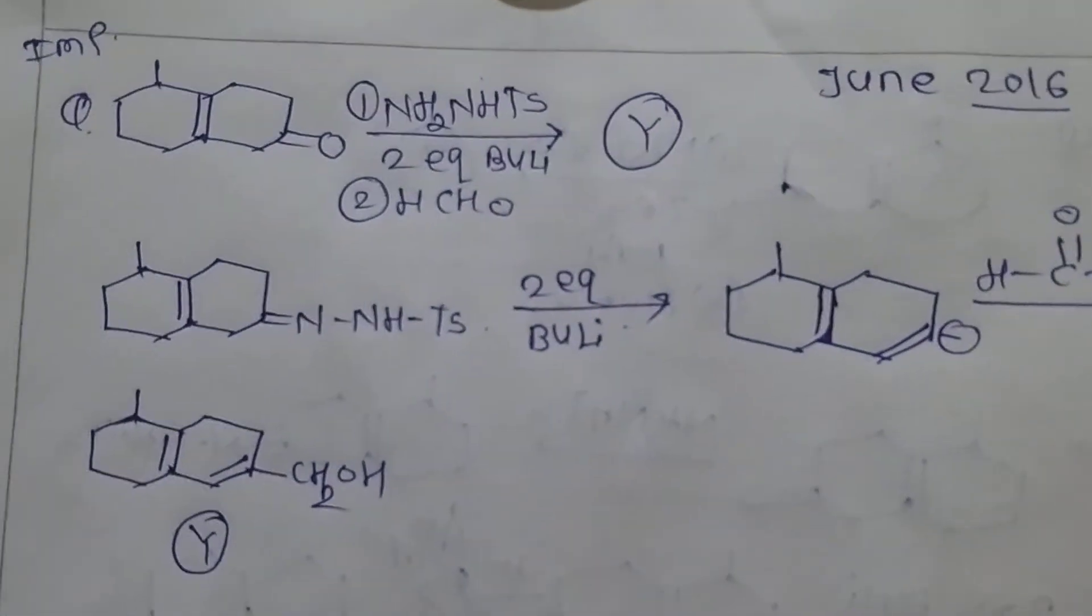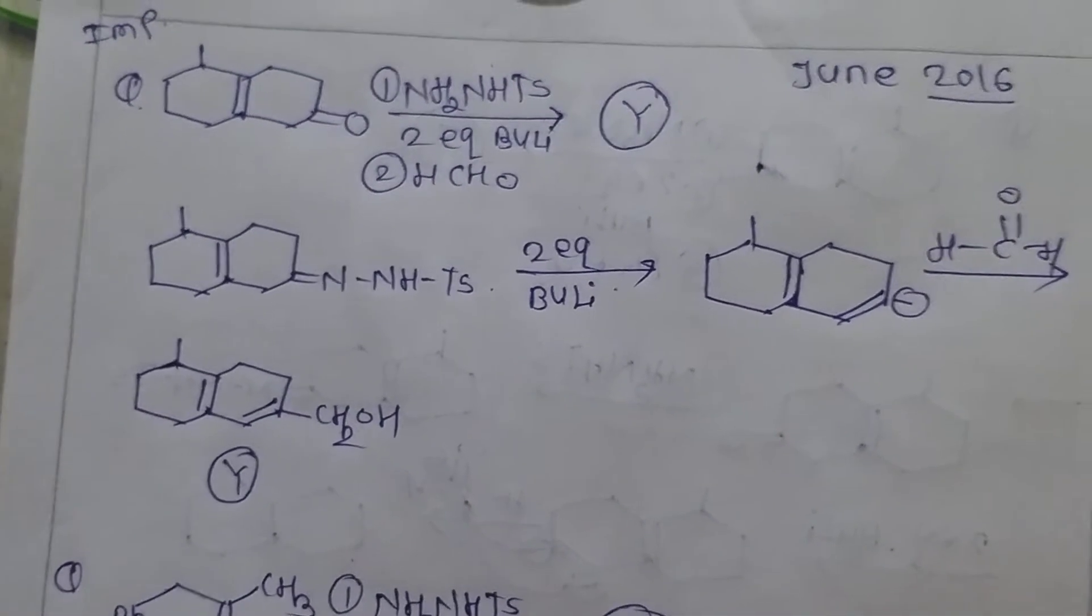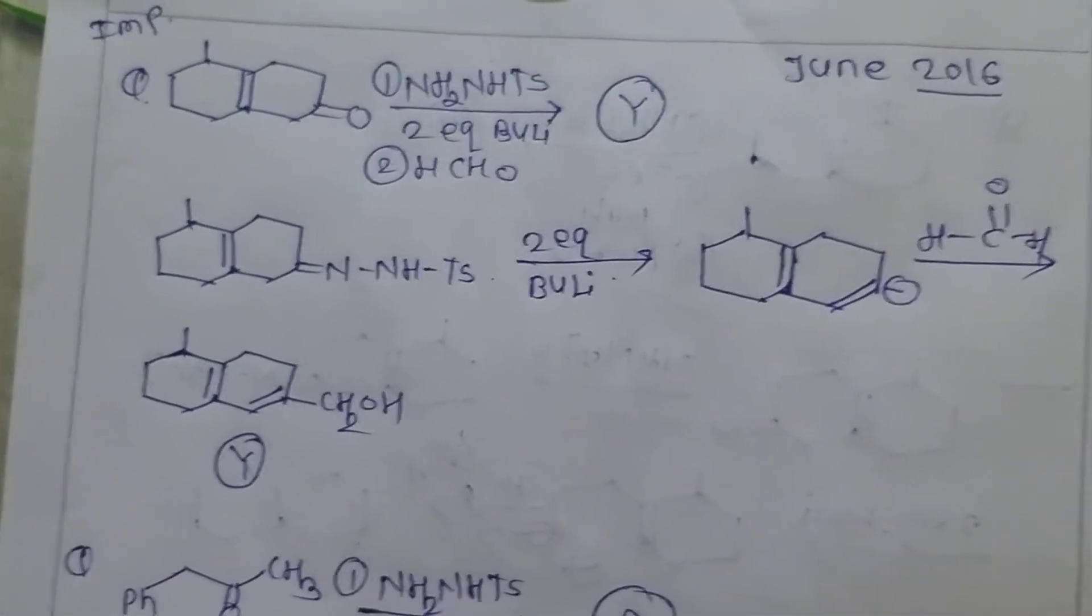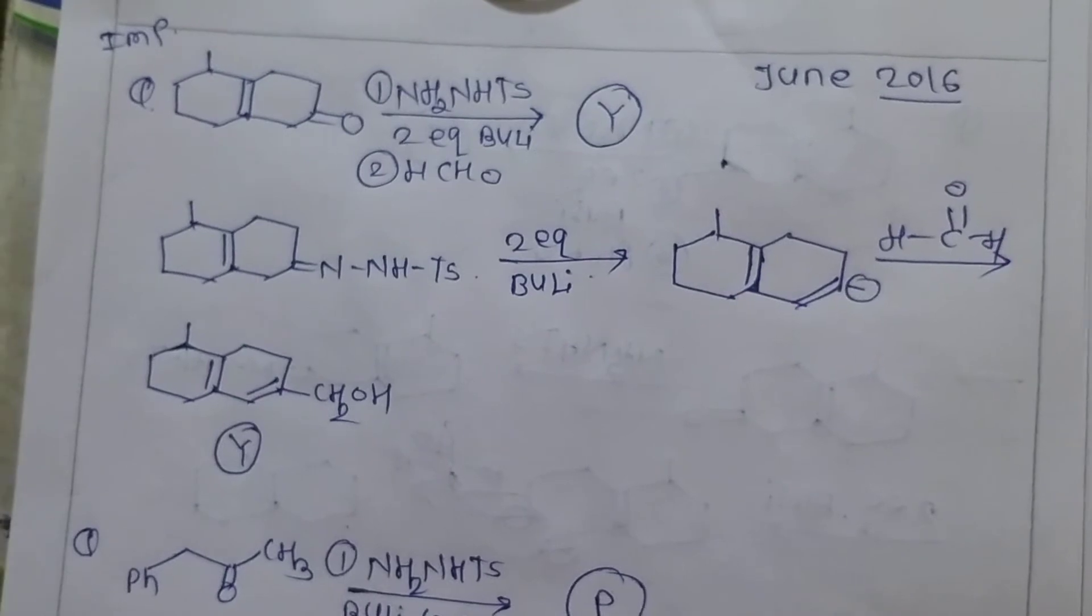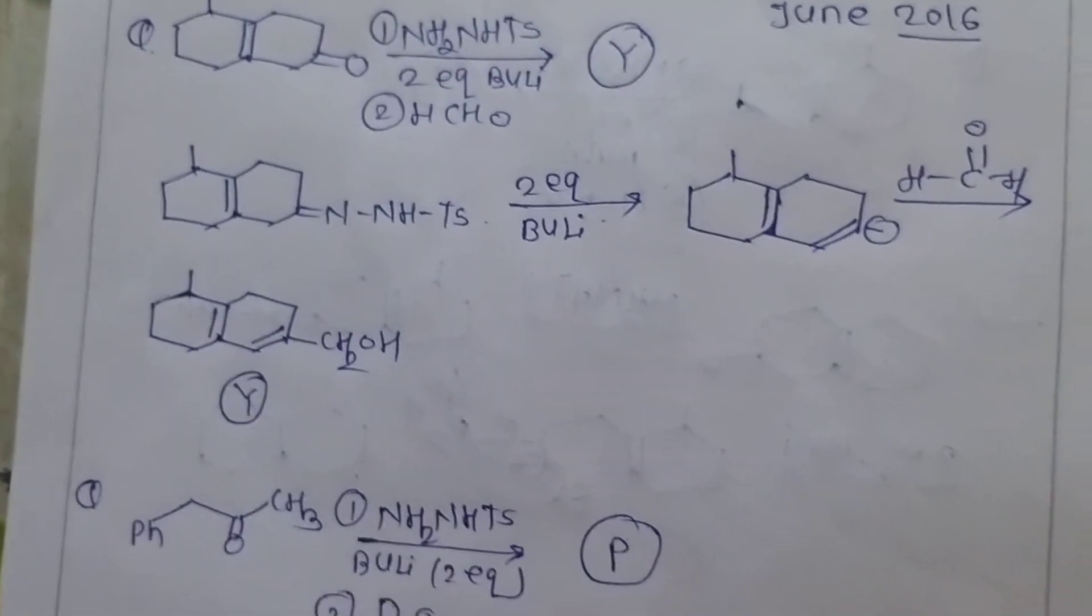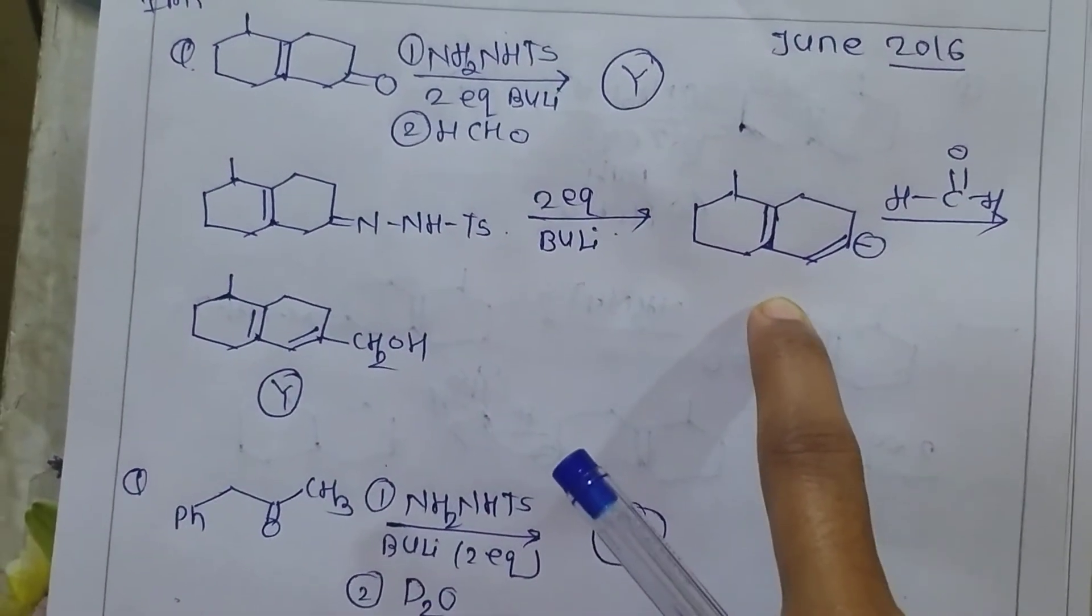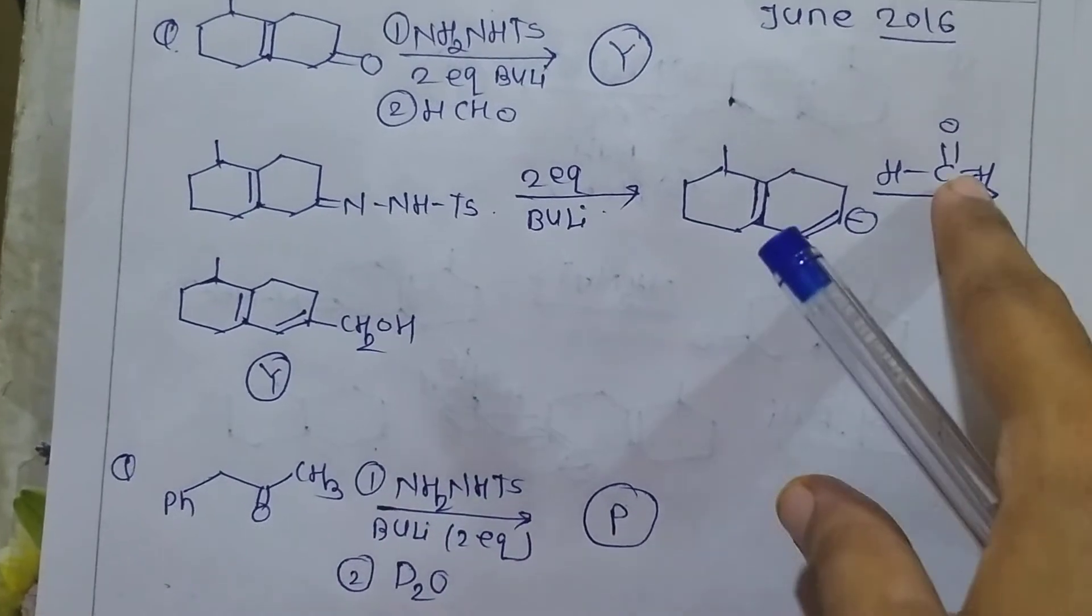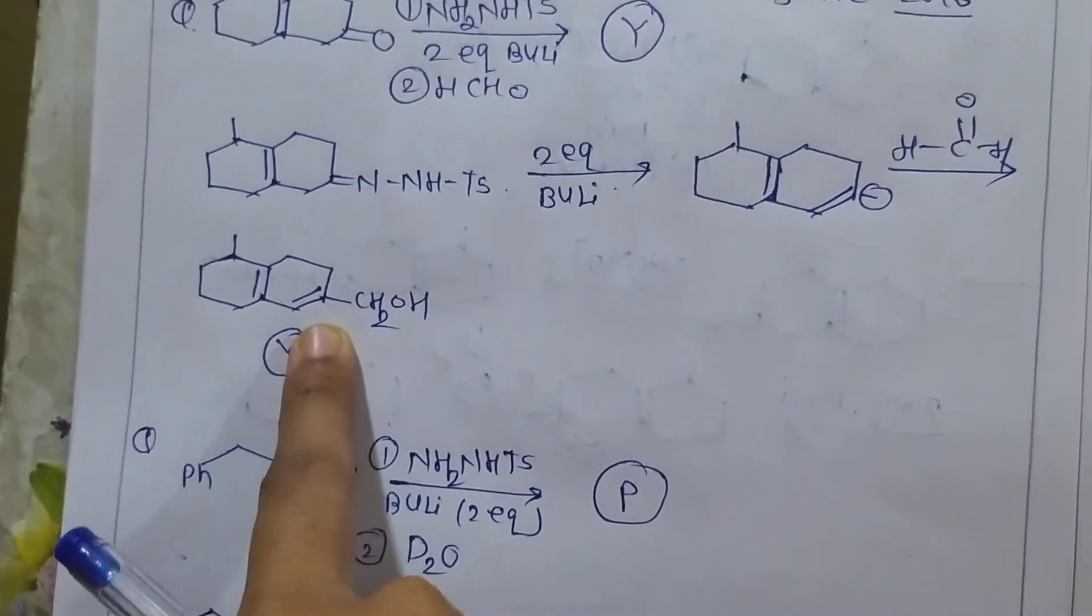Now look at this example. This is very important example asked in previous year question paper June 2016. By observing reagent we come to know that this is one of Shapiro reaction and major product of this reaction is less substituted alkene. And it will attack on aldehyde to form an alcohol like this.